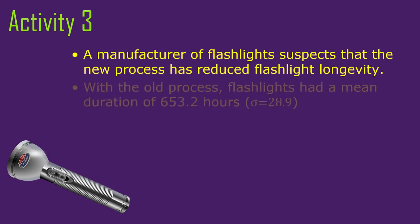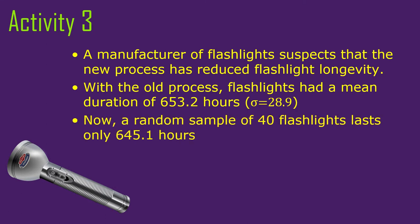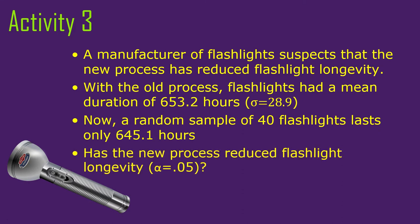A manufacturer of flashlights suspects that the new process — the way they're manufacturing their lights — has reduced the amount of time that the flashlights will last with a given set of batteries. With the old process, they know the mean was 653.2 hours with a standard deviation of 28.9 hours. Now they've taken a random sample of 40 flashlights, and the flashlights last only 645.1 hours. Has the new process reduced flashlight longevity, with alpha of 0.05?